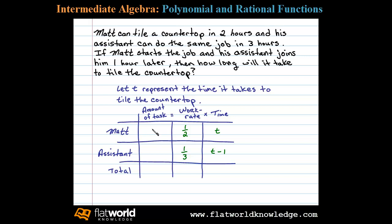Okay, now we can determine the amount of tasks Matt completes by multiplying his work rate times the time, or one-half times T. Now the amount of tasks that his assistant will complete will be one-third times T minus one, and certainly the task here is to complete one tiled countertop.